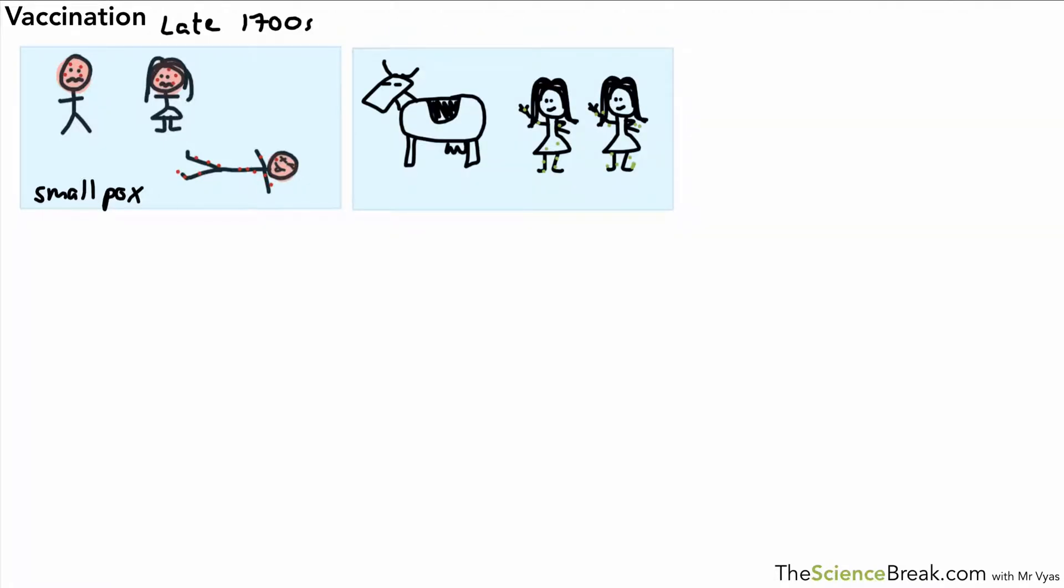Around that time in England, there was another disease that was often caught by milkmaids and that was called cowpox. Cowpox was a lot less deadly than smallpox and it was noticed that milkmaids that caught cowpox often did not go on to catch the more serious and deadly smallpox.